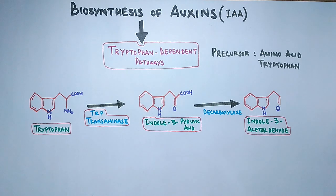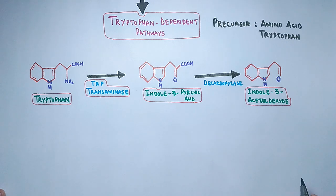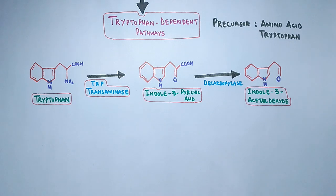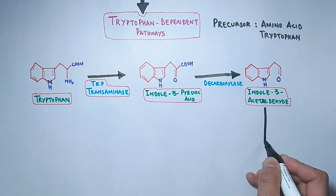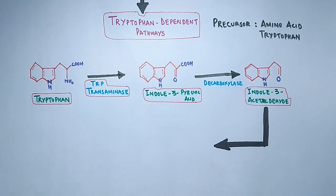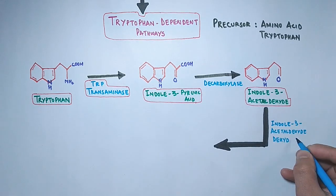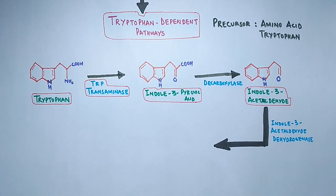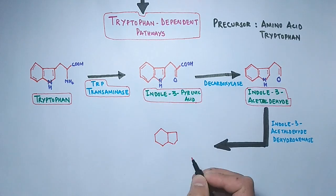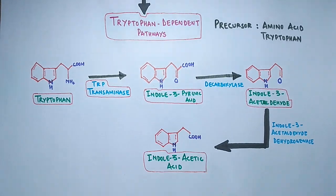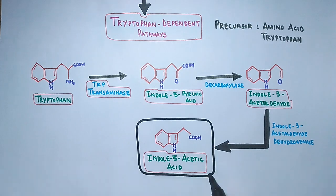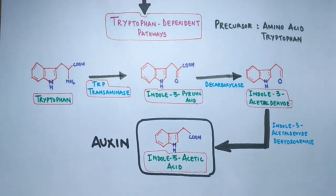Next, in the presence of decarboxylase enzyme, indole-3 pyruvic acid is converted into indole-3 acetaldehyde. This decarboxylation is catalyzed by indole-3 pyruvic acid decarboxylase. Finally, indole-3 acetaldehyde dehydrogenase acts on indole-3 acetaldehyde and converts it into indole-3 acetic acid, the chief auxin found in plants, via oxidation.